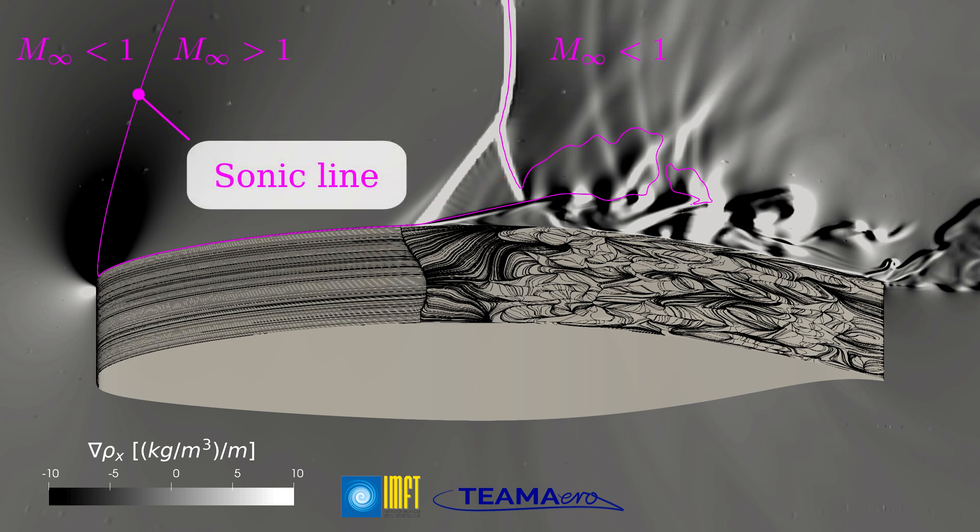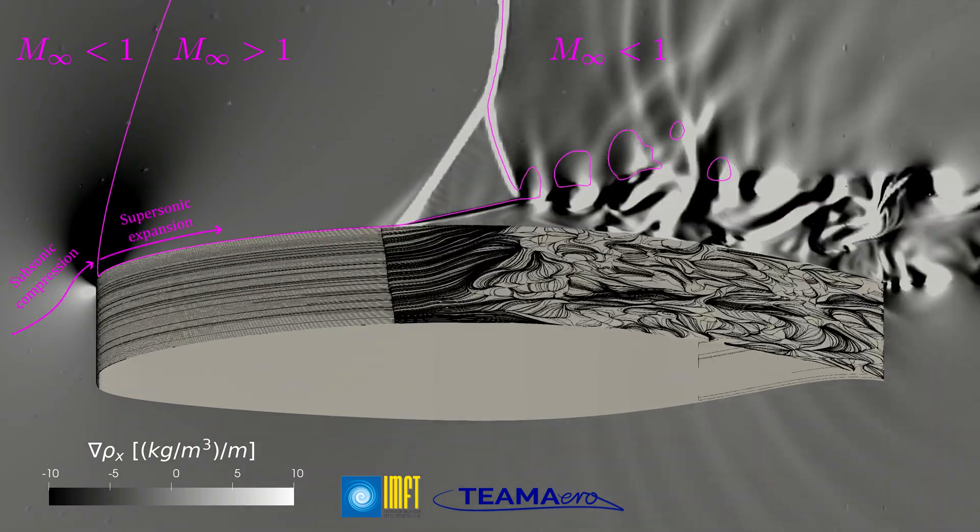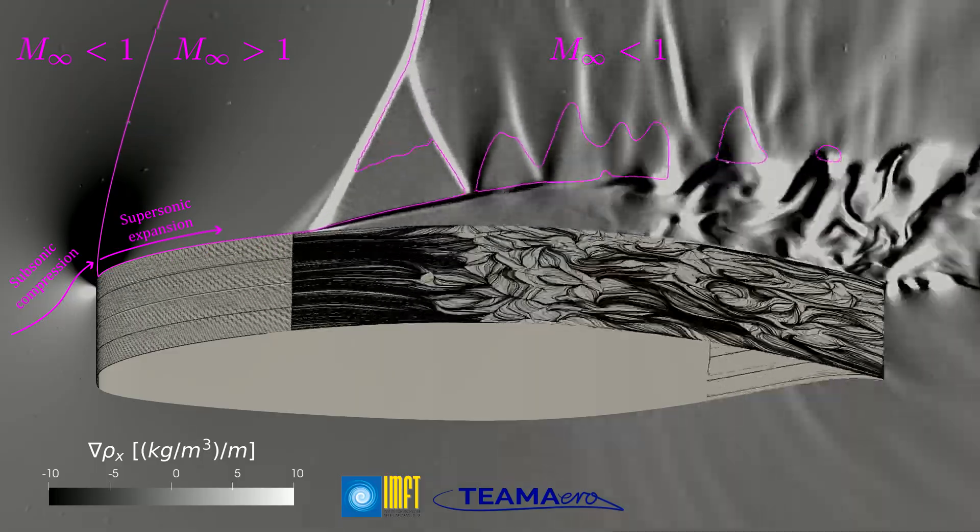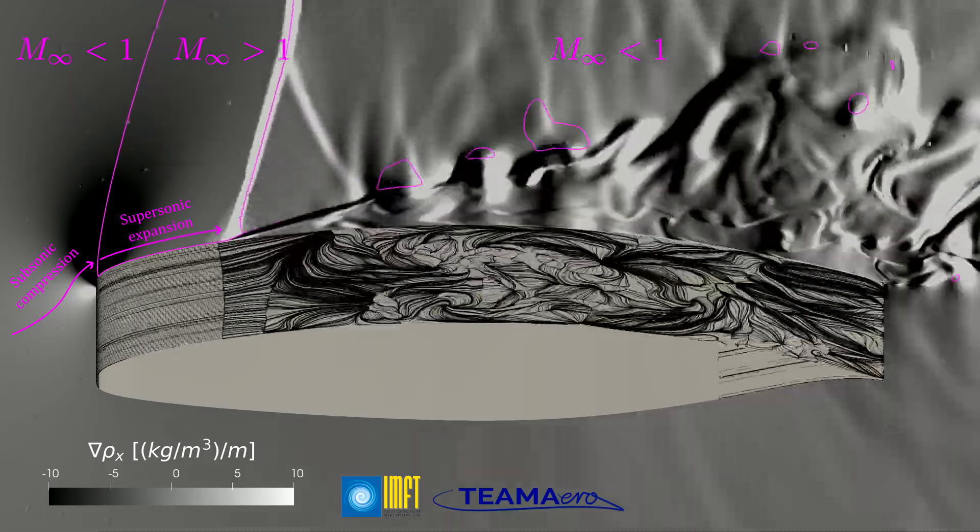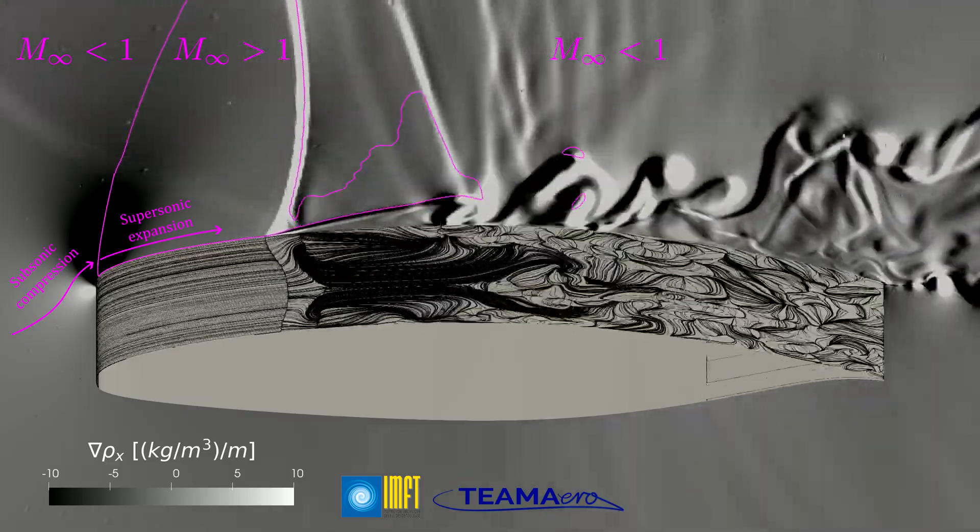I have also indicated the boundaries of the supersonic region by displaying the sonic line in magenta. The incoming subsonic flow is accelerated by a subsonic compression at the leading edge by also changing its direction upwards in order to follow the airfoil curvature.